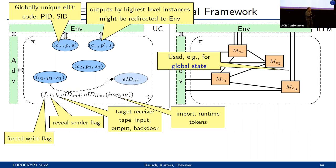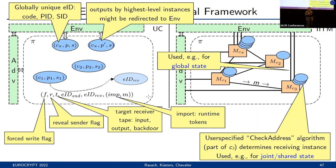During a run of the protocol, each of these machines can spawn an unbounded number of instances. Basically, machines are like classes and can be used to derive several objects or instances during a run. A machine instance can then send messages to other machine instances by writing directly on a connected tape. The existing instances of this machine run a user-specified check-address algorithm that is part of the machine code to determine whether they are the intended receiver of the message. The first instance that accepts gets to process the message; if none accepts, a new instance is created. This flexible addressing mechanism is used to model different types of joint and shared state.